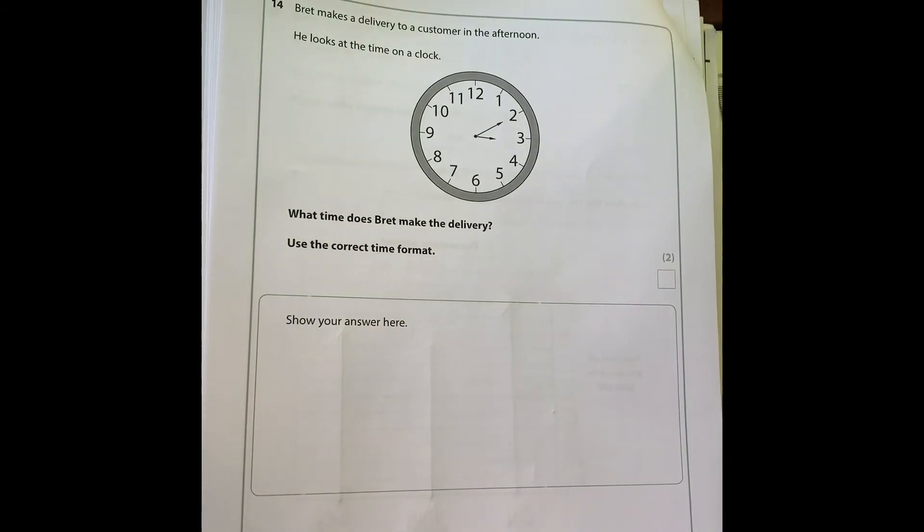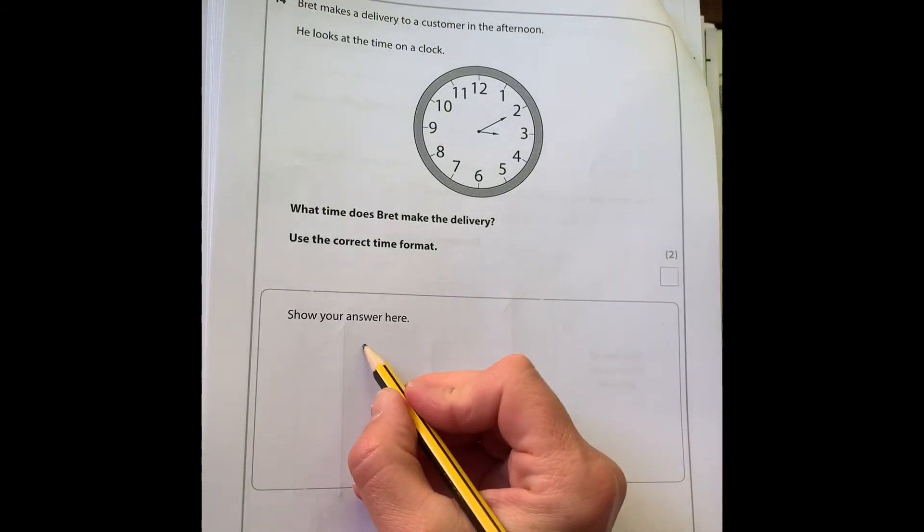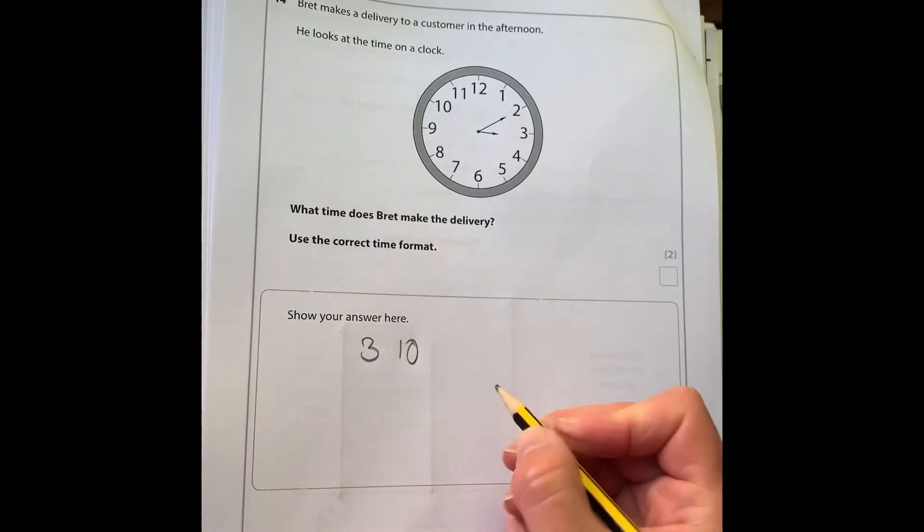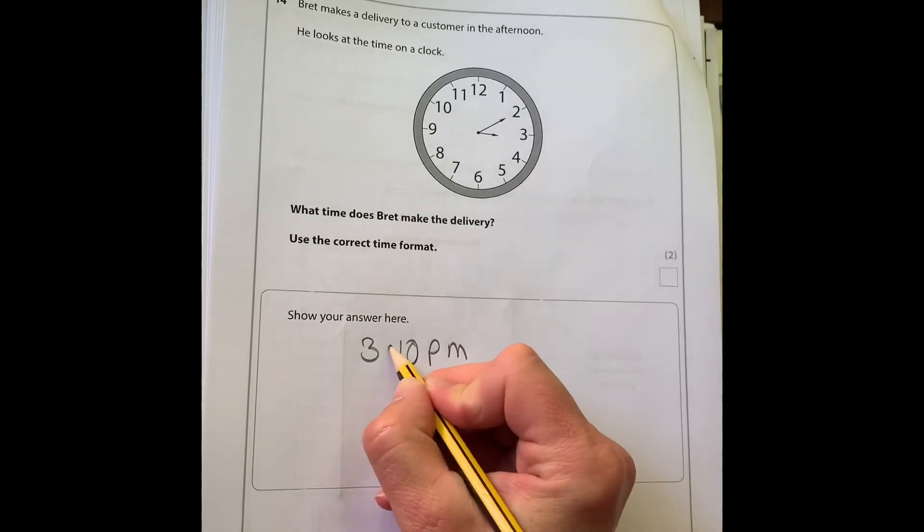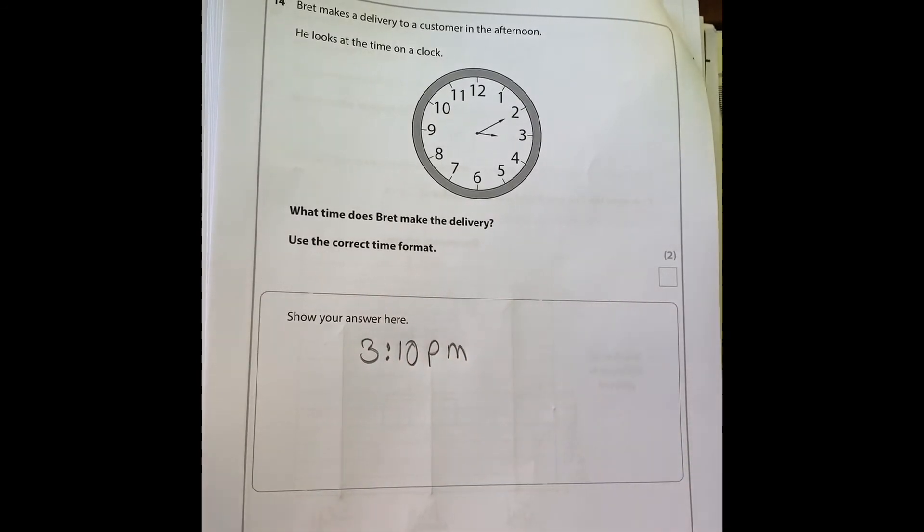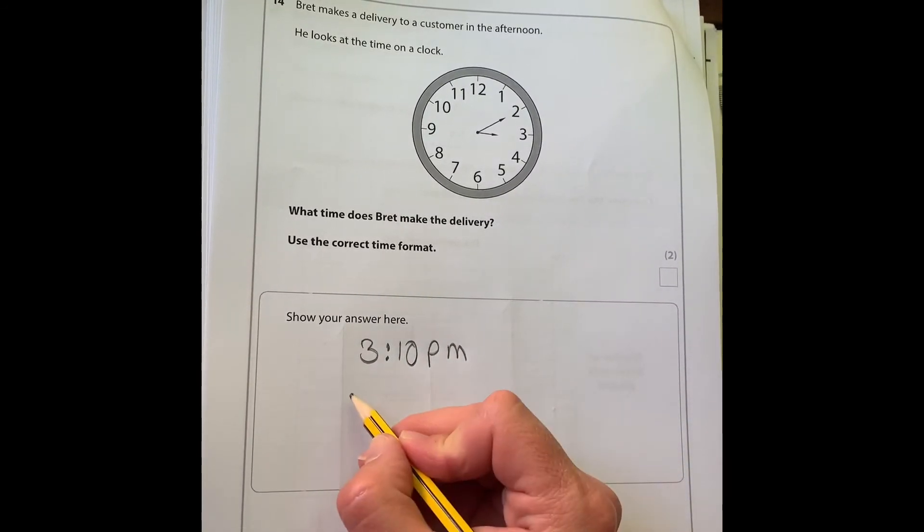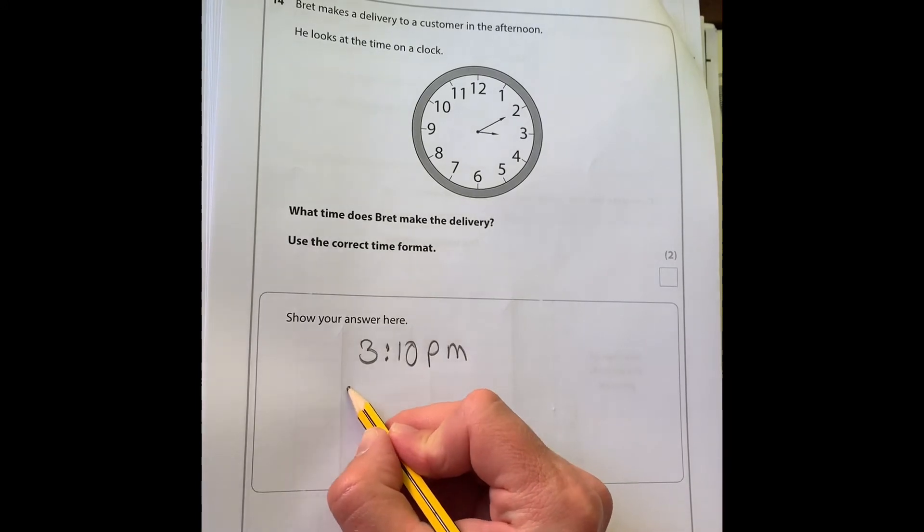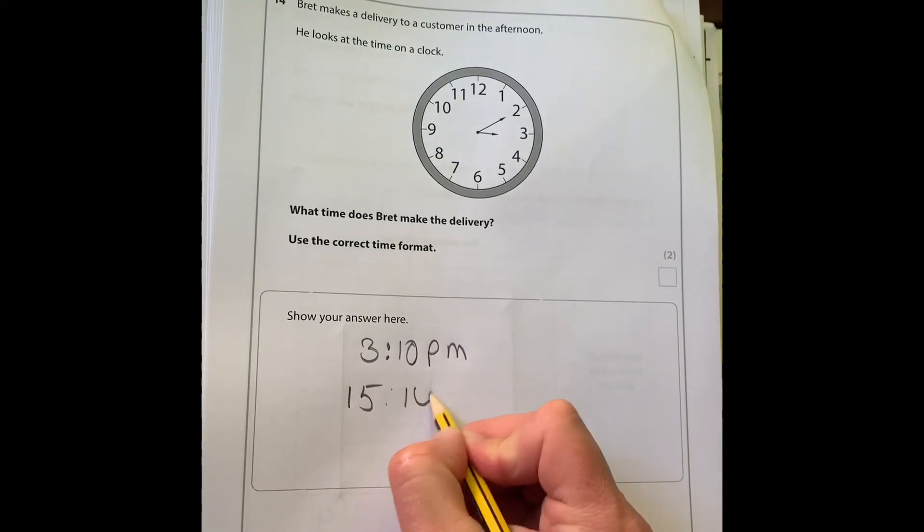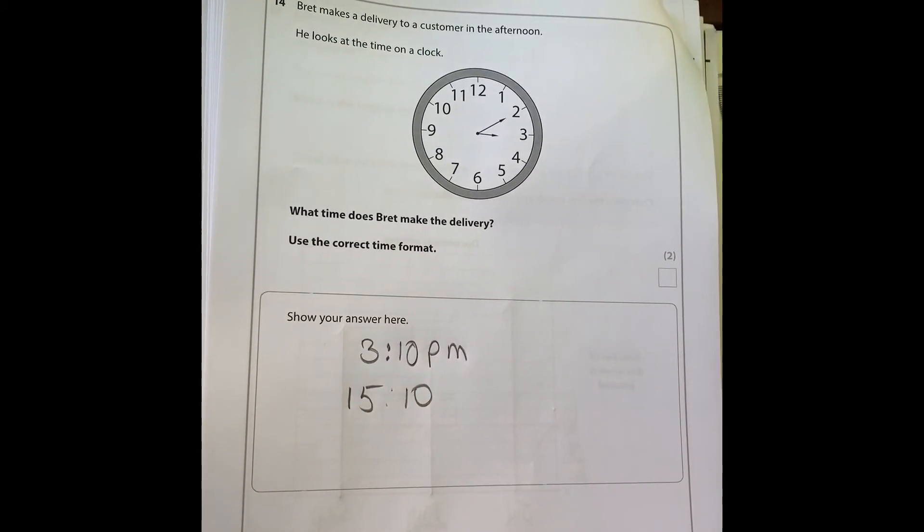Brett makes a delivery to a customer in the afternoon. He looks at the time on a clock. What time does Brett make the delivery? So it is 10 past three. You can either show that as 3:10 p.m. because it's in the afternoon, or if you'd rather use 24 hour clock, then you can say 15:10 and you don't need p.m. then because it's obvious it's the afternoon.